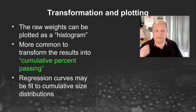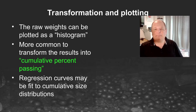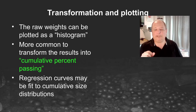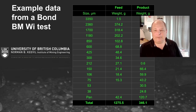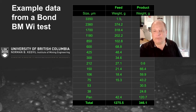In mineral comminution, it's much more common to transform these results into a cumulative percent passing, or sometimes a cumulative percent retained curve. These cumulative curves are suitable for doing regression analysis, and because they're suitable for regression analysis, that allows us to do some interesting things. Here's an example of data from some Bond Work Index tests sponsored at the University of British Columbia — a feed sample and a product sample — showing the raw weights in each size class and the amount left in the pan.